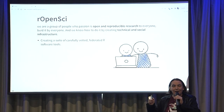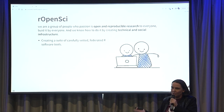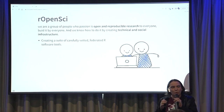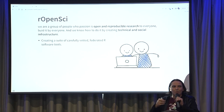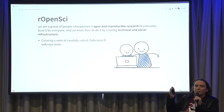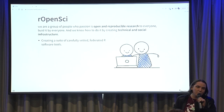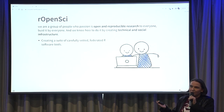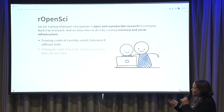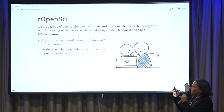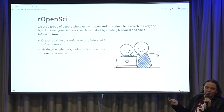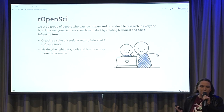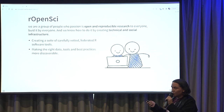One of the things we do is build packages to help scientists do science. Research software engineers send code packages to our review process. We review them, help them get better, and then they become part of our suite. Developers have the support of the community and staff of rOpenSci, and users get high quality software to do science. We also try to make RAID data tools and best practices more discoverable. We have a project called Our Universe that helps publish and search more than 18,000 packages.